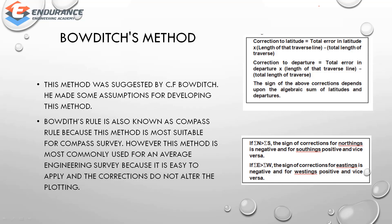The correction to latitude equals the total error in latitude multiplied by the length of that traverse line, divided by the total length of the traverse. Similarly, the correction to departure equals the total error in departure multiplied by the length of that traverse line, divided by the total length of the traverse.